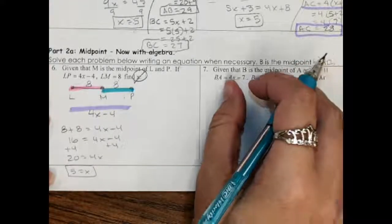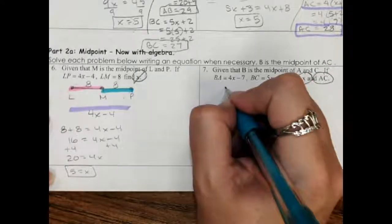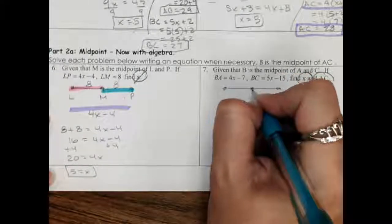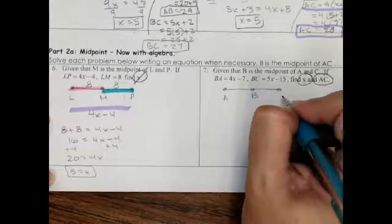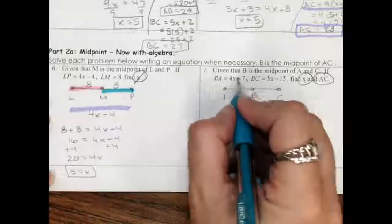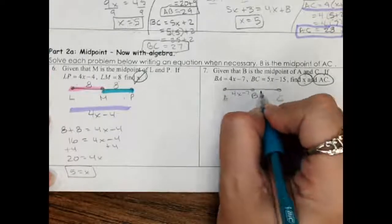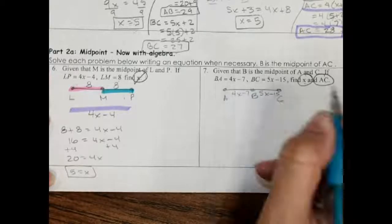Now we're going to do the other one. I want you to first, just like I said in the first video, circle the things I'm looking for. Draw the picture. B is the midpoint, it's in the middle. Then label the parts. A, B, C. I'm going to highlight these.